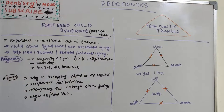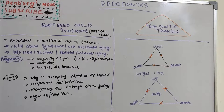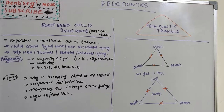The clinical findings and parents' description will not correlate because they don't want to be in trouble. There will be unexplained malnutrition, and the explanation given by the parents or caregivers will be very vague or inconsistent. From history alone, we can easily identify battered child syndrome.